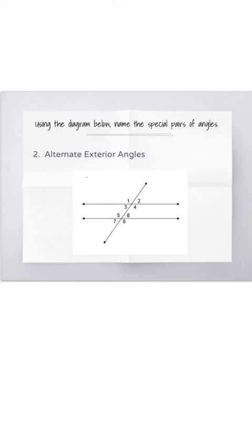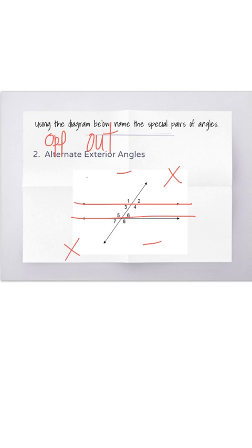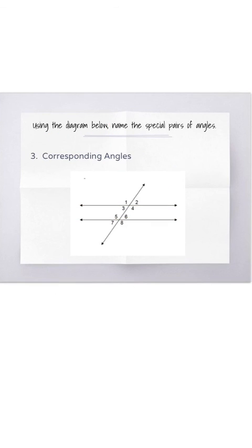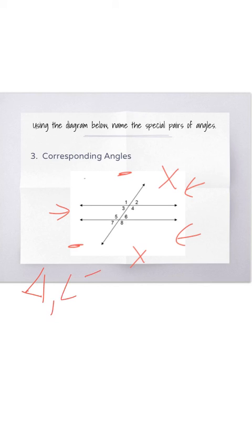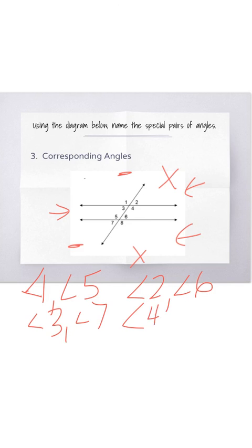Number 2: alternate exterior angles. Remember that alternate means opposite and exterior means outside. So we are looking for angles outside of the parallel lines and on the opposite side of the transversal. This could be angles 1 and 8, or angles 2 and 7. For corresponding angles, remember that these are on the same side of the transversal and one has to be inside the parallel lines and one has to be outside. These could be angles 1 and 5, angles 2 and 6, angles 3 and 7, or angles 4 and 8.